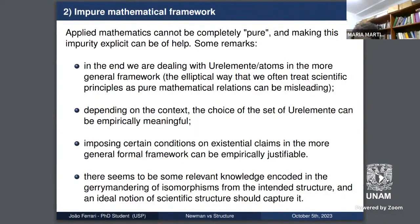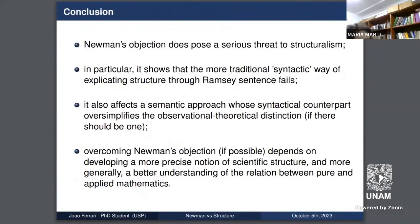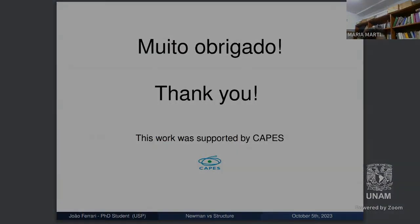Newman's objection poses a serious threat to structuralism, and in particular to the traditional way of explicating structure through the Ramsey sentence. But we've also seen it can affect the semantic approach. To overcome trivialization, if possible, we need a more precise notion of scientific structure and, more generally, a better understanding of the connection between mathematics and applied mathematics. Thank you all.